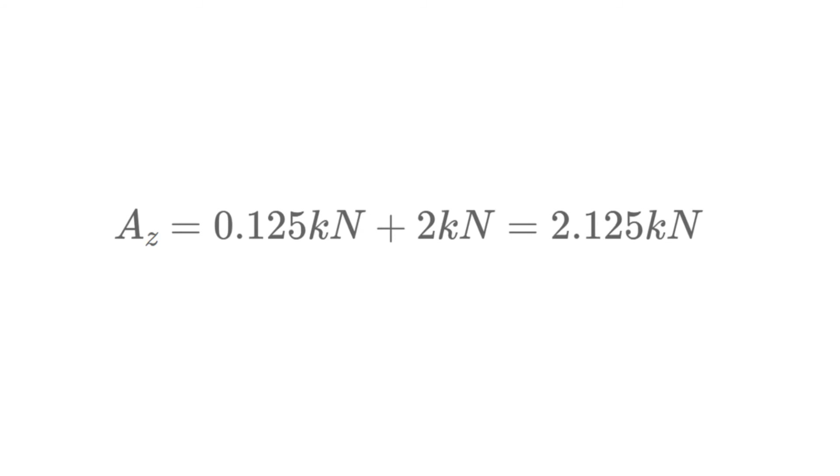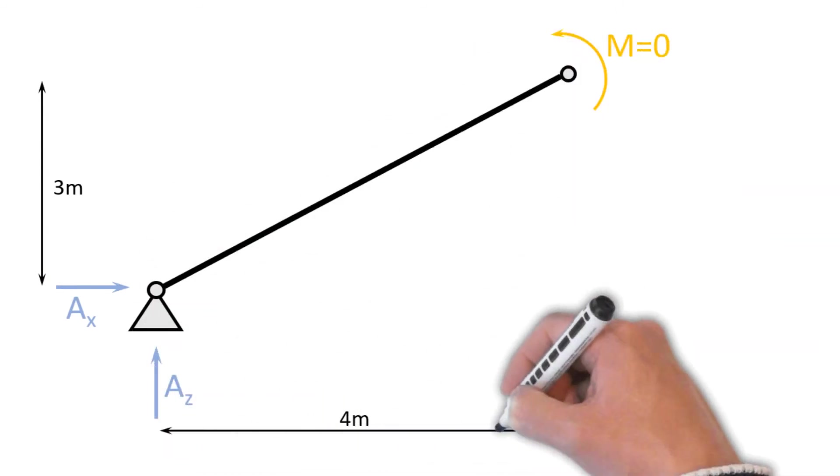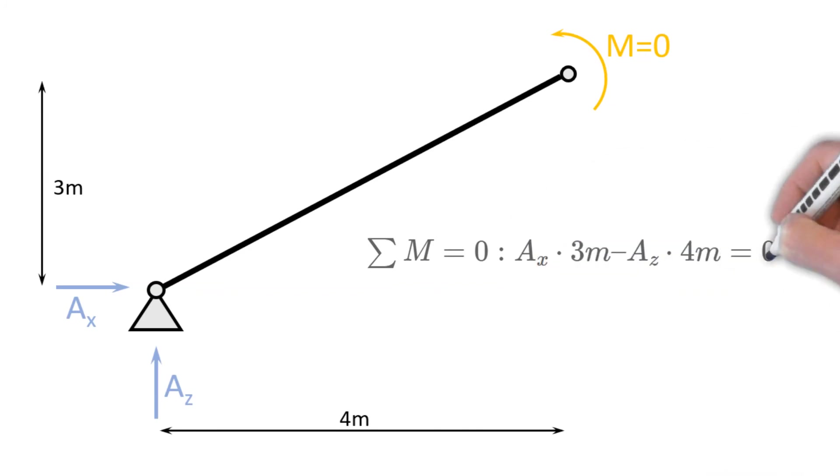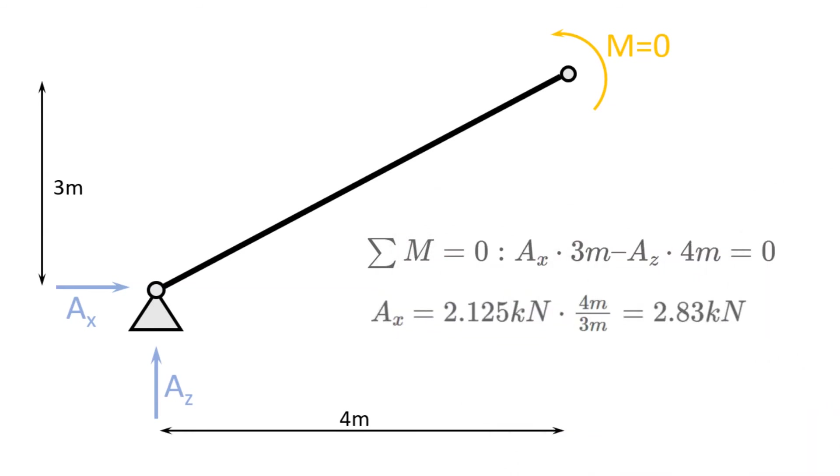Now to calculate the two horizontal support forces Ax and Bx we define another moment equilibrium in the top hinge but only considering the left beam. Now the new moment equilibrium looks like sum of all moments equals zero: Ax times 3 meters minus Az times 4 meters equals zero. Now this we can actually solve for Ax which leads us to Ax equals 2.125 kN times 4 meters divided by 3 meters equals 2.83 kN.